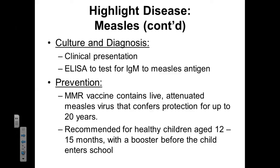When diagnosing a patient with measles, the physician is going to look for the clinical presentation — the signs and symptoms. While each sign and symptom is fairly generic by itself, when taken together they can be indicative of a measles infection. To confirm the presence of measles, we perform an ELISA test using immunoglobulin M as the measles antigen. To prevent measles, we focus on vaccinations. The measles-mumps-rubella vaccine contains a live, attenuated measles virus and confers protection for approximately two decades.